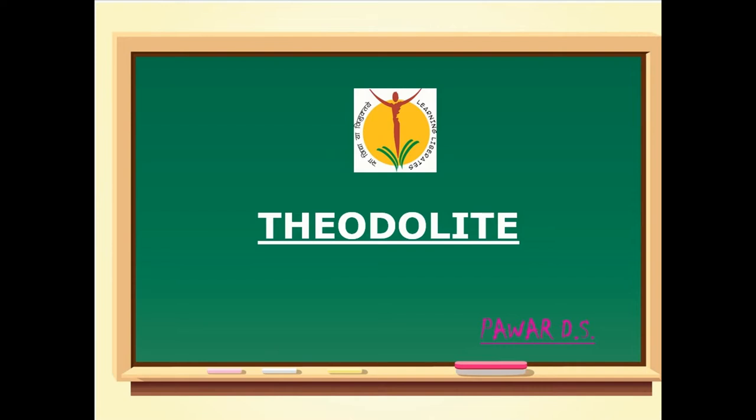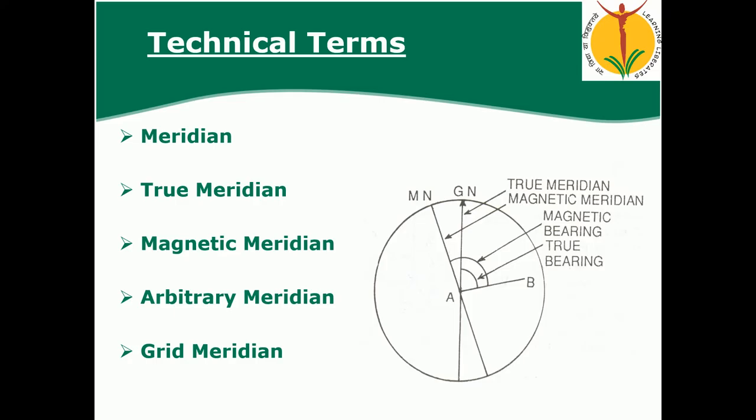We are going to start the unit on theodolite, which is very important in surveying. Theodolite is an instrument used to measure horizontal and vertical angles, and it has various uses. Today we are going to see the construction of the theodolite and how to use it for various purposes in civil engineering.